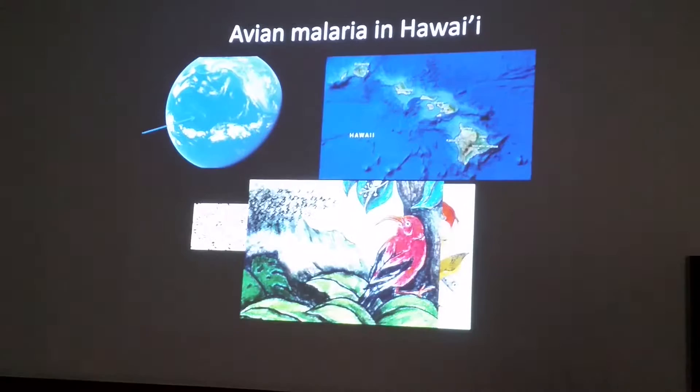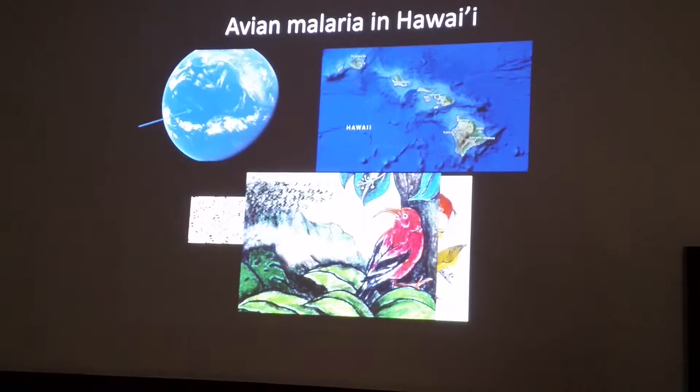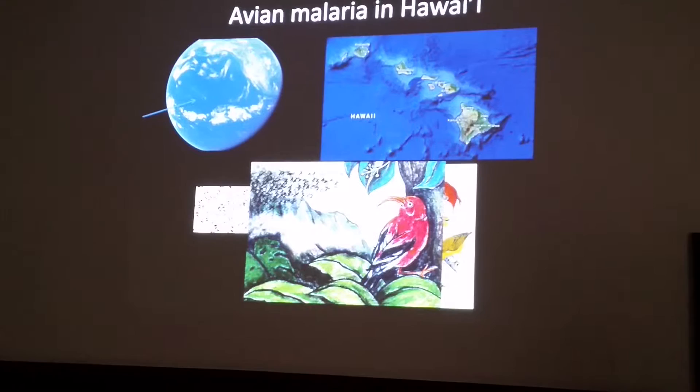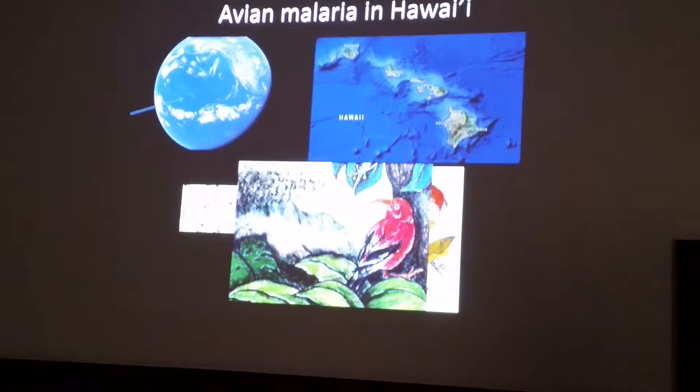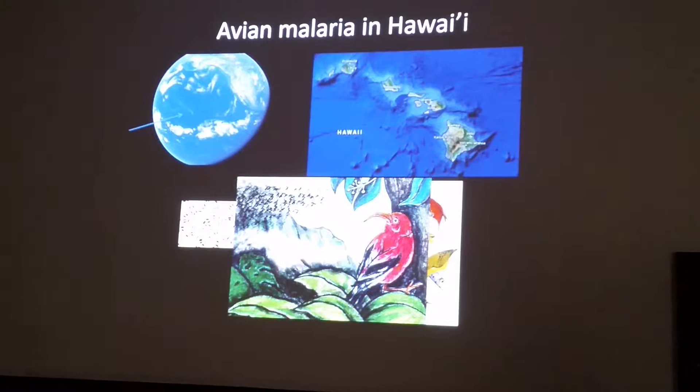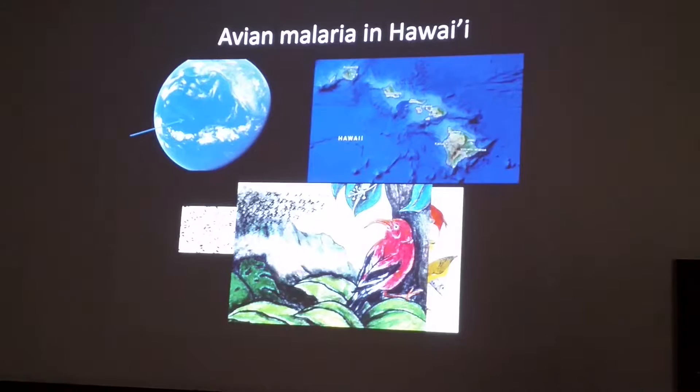Unfortunately, in the late 1930s, humans accidentally introduced Plasmodium relictum, which is the only strain of Plasmodium on Hawaii today. We also introduced Culex quinquefasciatus, the mosquito vector. Although there is a large diversity in avian malaria as well as mosquito vectors, these are the only two important players on Hawaii.